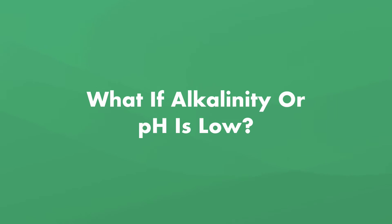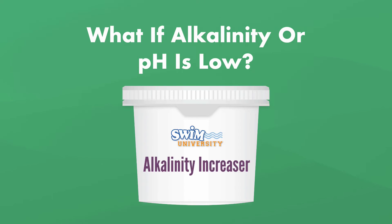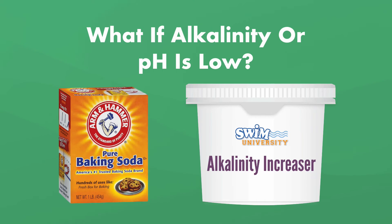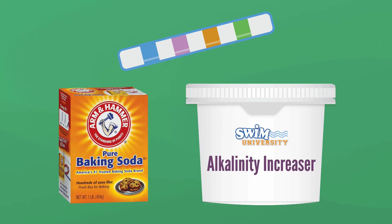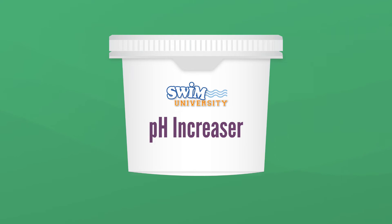What if the alkalinity or pH is too low? If both readings are low, you can start by increasing your alkalinity first. You can do this with an alkalinity increaser or with baking soda. Test the water again — if the pH is still low but the alkalinity is good, then you can add pH increaser, or soda ash, also known as sodium carbonate.